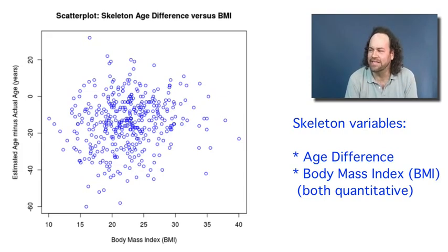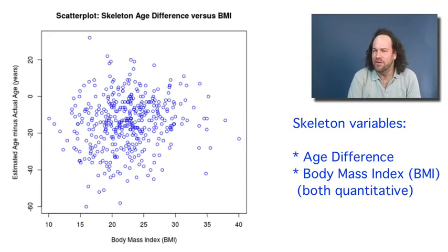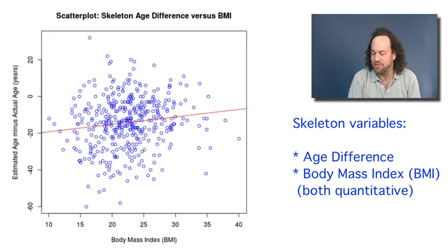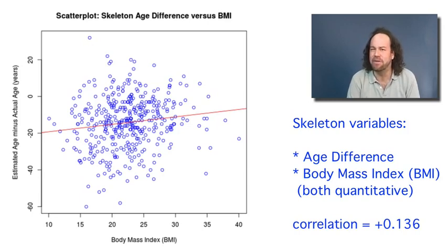Looking at this scatter plot seems perhaps the most confusing of all, because there are dots all over the place. Once we learn how to do lines of best fit, we will be able to see that in this case the line of best fit is sloped slightly positive — meaning that when the BMI gets larger, the age difference tends to get slightly larger. We can also compute the correlation coefficient; in this case we get a correlation equal to 0.136. So it's not large — it's fairly close to 0 — but it is a little bit positive, suggesting that when the BMI gets larger, the age difference also gets a little bit larger.